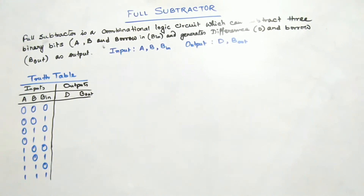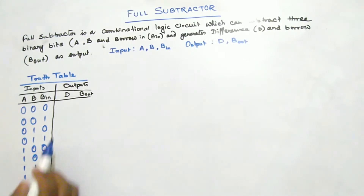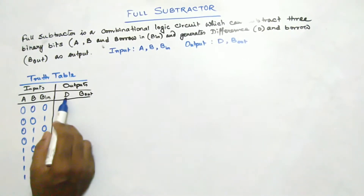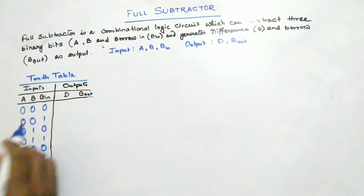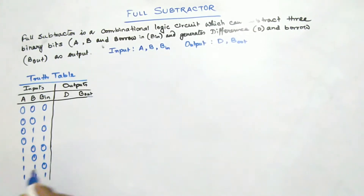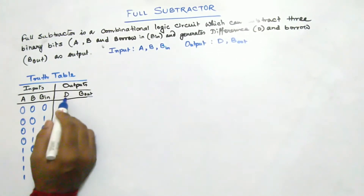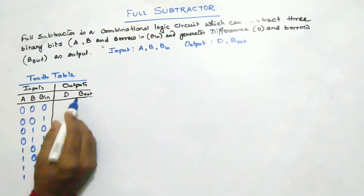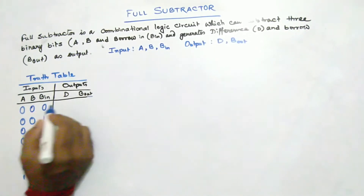We have three inputs — A, B, and B in — and two outputs: D (difference) and B out. Now let us find out the truth table for difference and B out, and find their values.